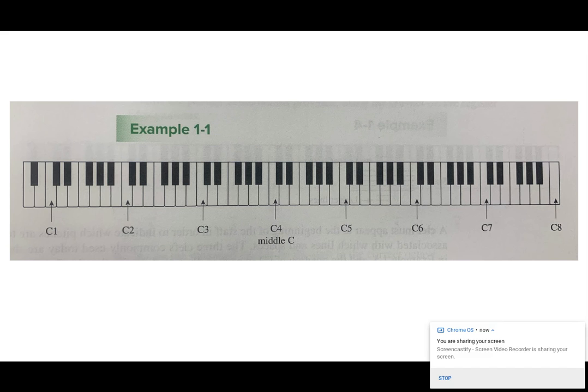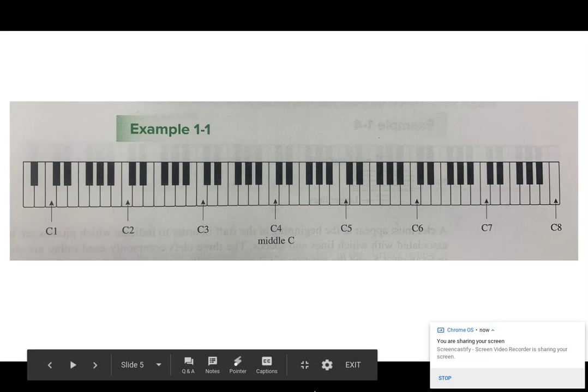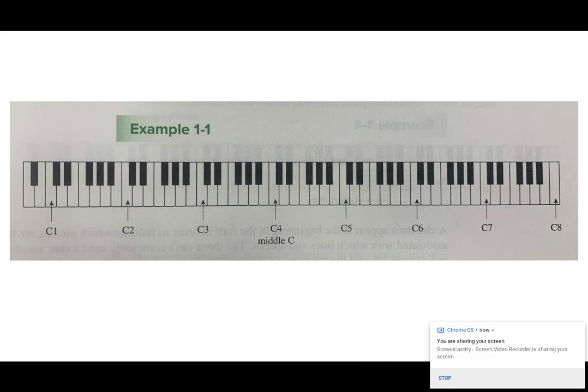So hopefully when you're looking at example 1-1, you have a basic understanding of how the keyboard works that if this is C, you would have C, D, E, F, G, A, B until you get back to C. And if you look at C4, middle C, you'll notice that there's two black keys to the right of your C. And you might notice that that happens at every C. Our keyboard is set up in patterns, two black keys, and then three black keys, two black keys, three black keys.